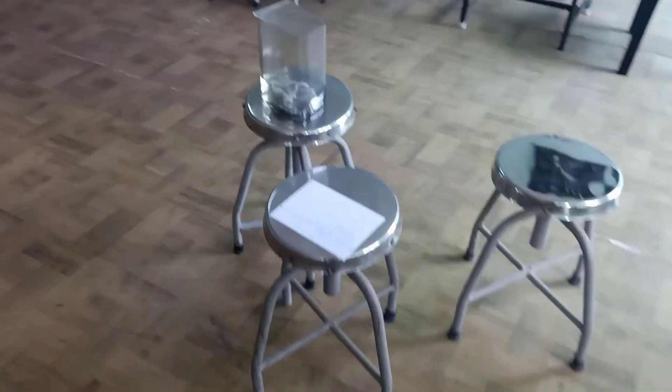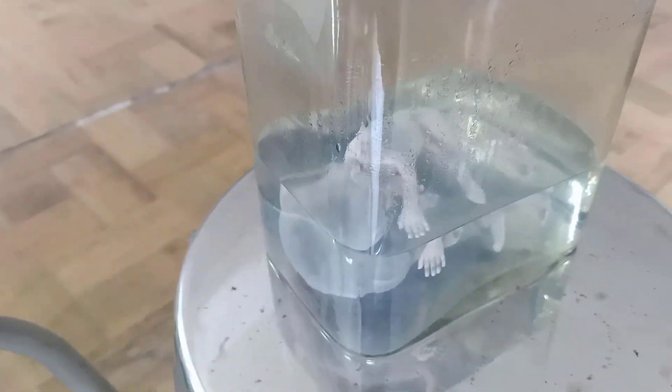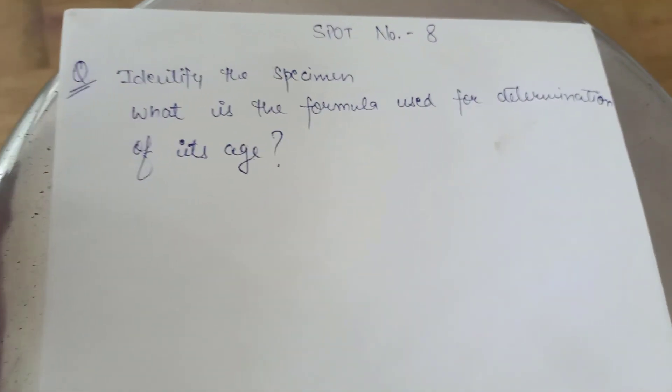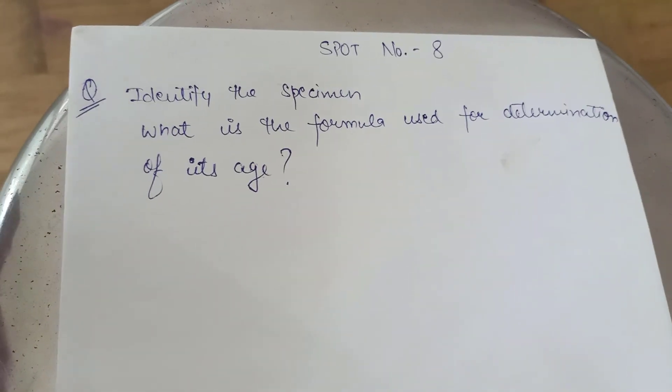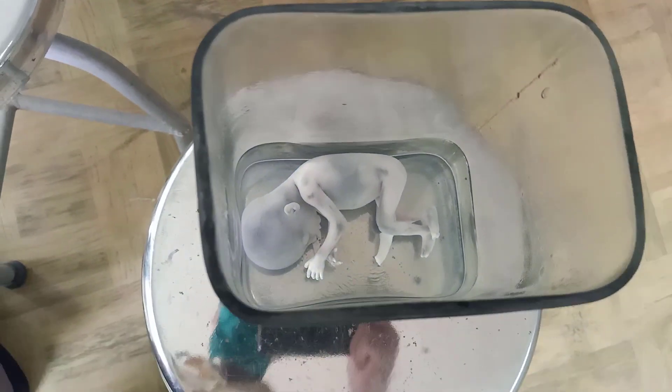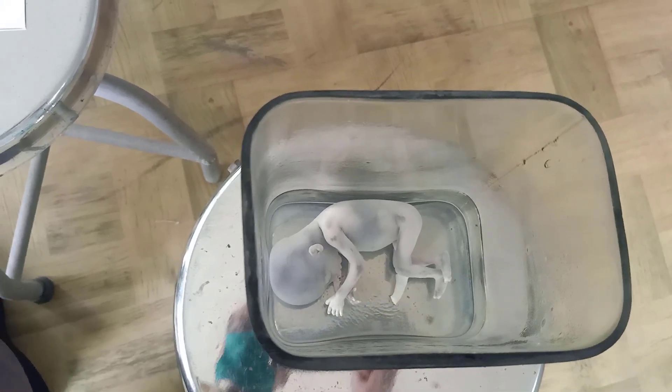The next specimen is a fetus. The question asked was: identify the specimen and what is the formula used for determination of its age? For age estimation, we use Hess's formula, in which we measure the length of the fetus. The approximate length will be around 16 centimeters, so as per Hess, the age will be 4 months.